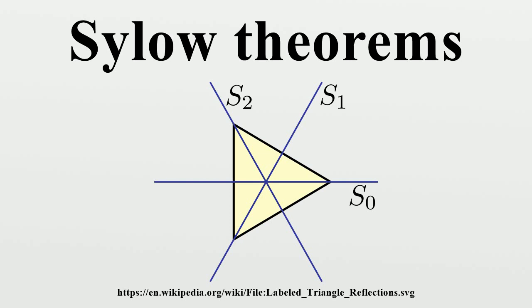Next, suppose the order of G equals 42 equals 2 times 3 times 7. Here n_7 must divide 6 and n_7 must equal 1 mod 7, so n_7 equals 1. So, as before, G cannot be simple.